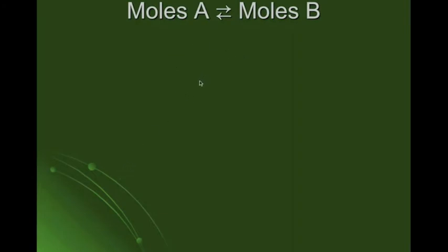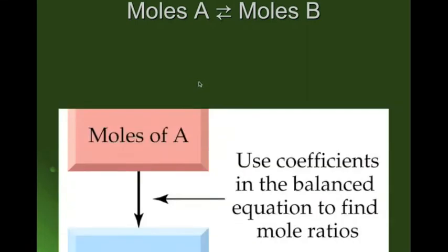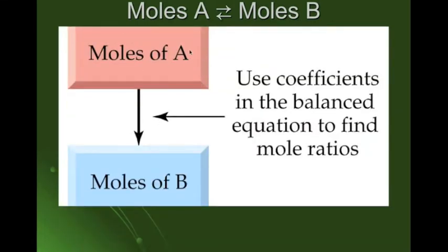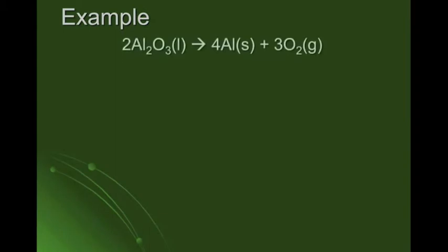The first type we're going to do is a mole-to-mole conversion. In a mole-to-mole conversion, we're changing from moles of A — where A can be anything in the chemical equation — to moles of B, where B can also be anything. For this, we use the coefficients in the balanced equation to find the mole ratios. It's really important that we know how to balance equations from chapter eight.